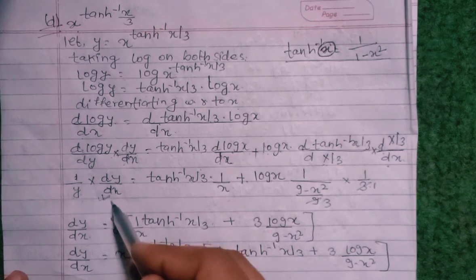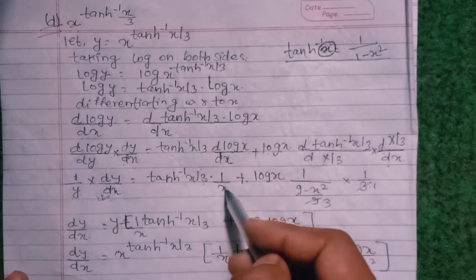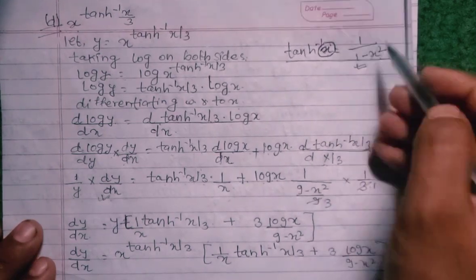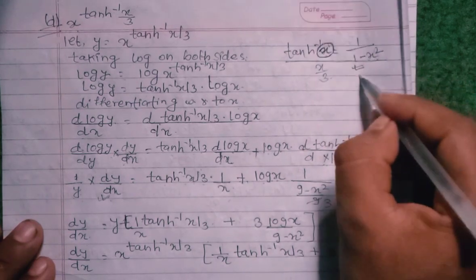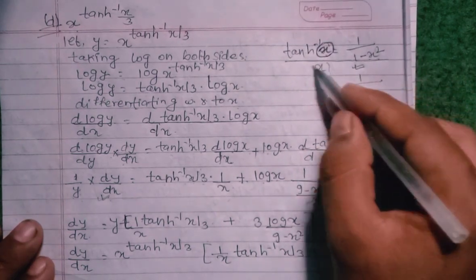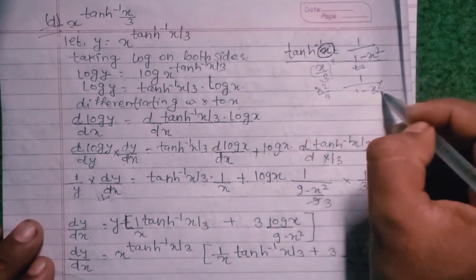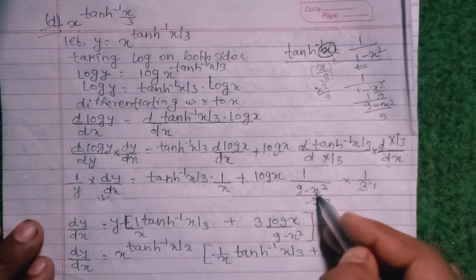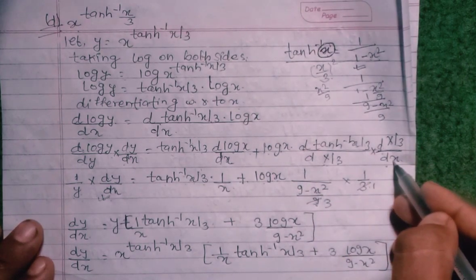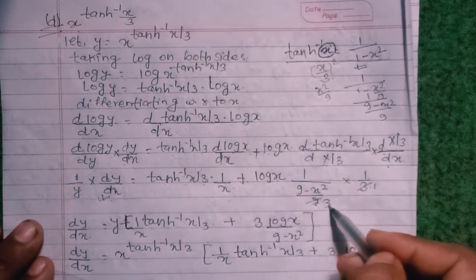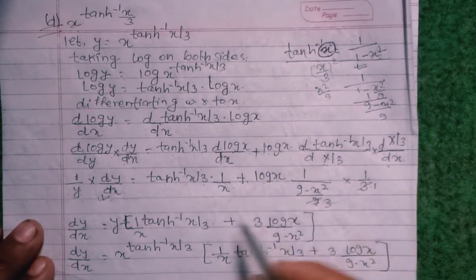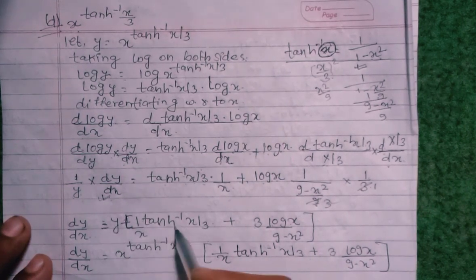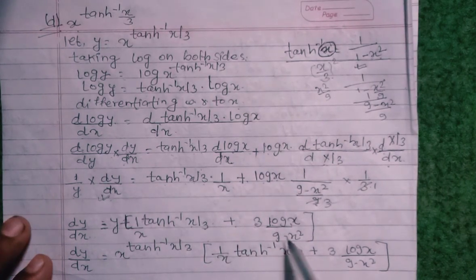So 1/y times dy/dx equals tan⁻¹(x/3) times 1/x plus log x times the derivative of tan⁻¹(x/3). Using the formula d/dx[tan⁻¹(u)] = 1/(1+u²), with u = x/3, we get 1/(1 + x²/9) times 1/3, which simplifies to 3/(9 + x²). So dy/dx equals y times [1/x times tan⁻¹(x/3) plus 3 log x divided by (9 minus x²)].